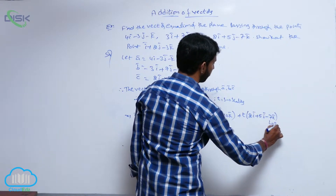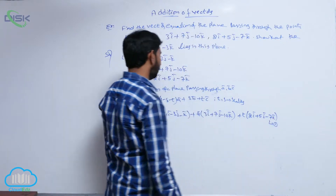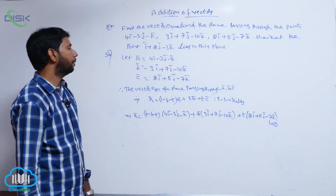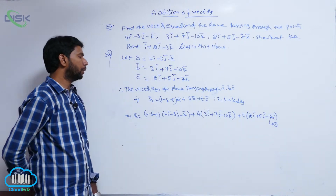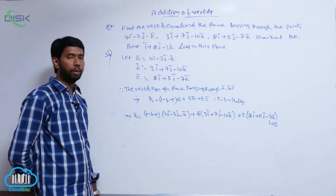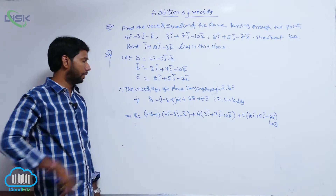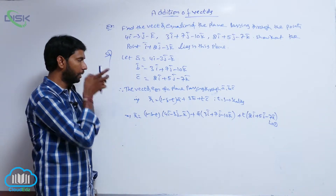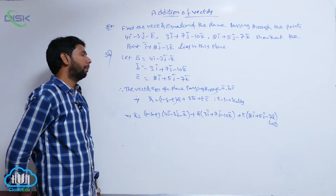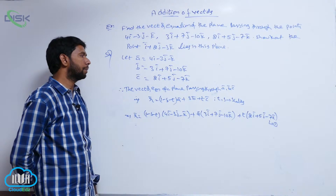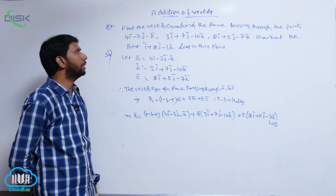That is the equation of a plane passing through the points ā, b̄, c̄: r̄ = (1 - s - t)ā + sb̄ + tc̄.